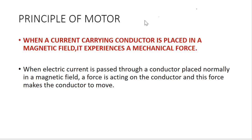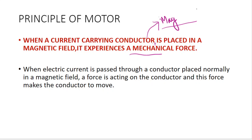Every current-carrying conductor has its own magnetic field, and we will use the right-hand thumb rule for the magnetic field lines. Now, if a current-carrying conductor is placed in a magnetic field, another magnetic field is present, and due to the interaction of these two magnetic fields, the conductor experiences a mechanical force — that is, the conductor moves.